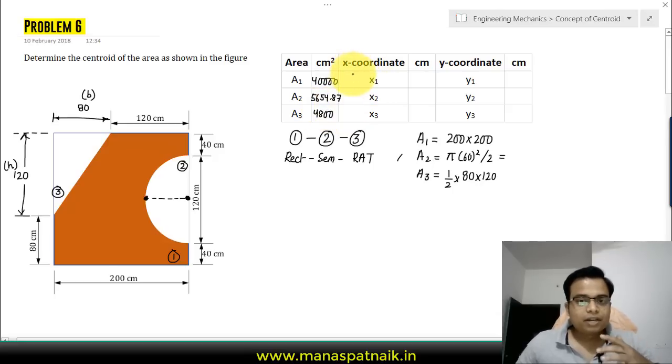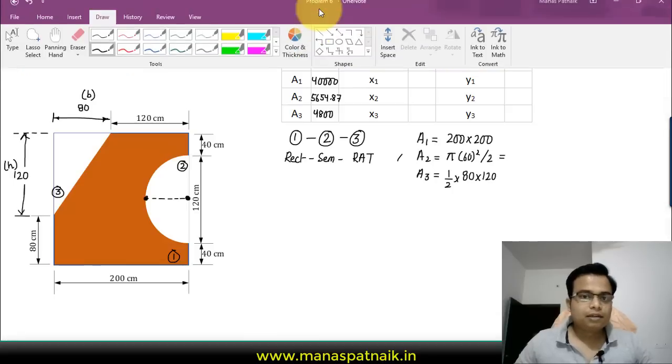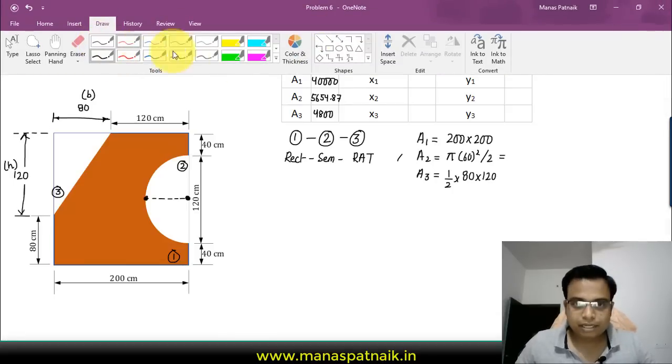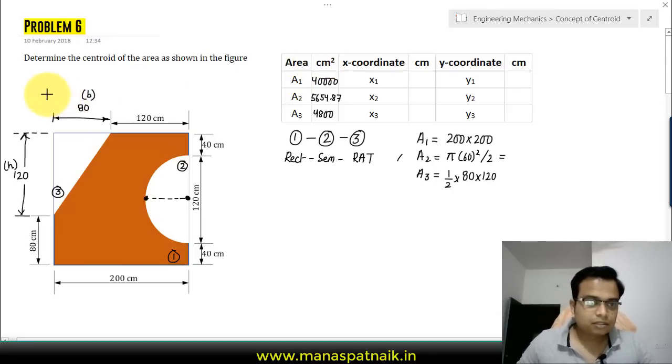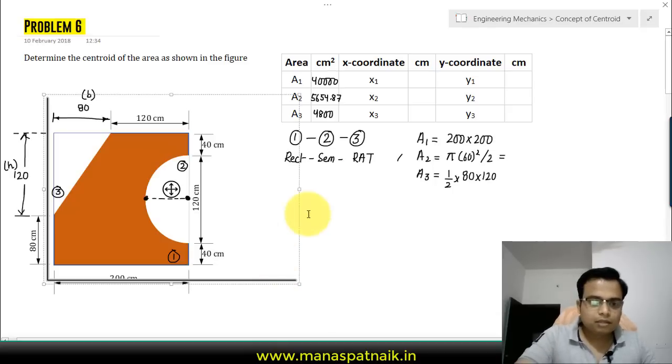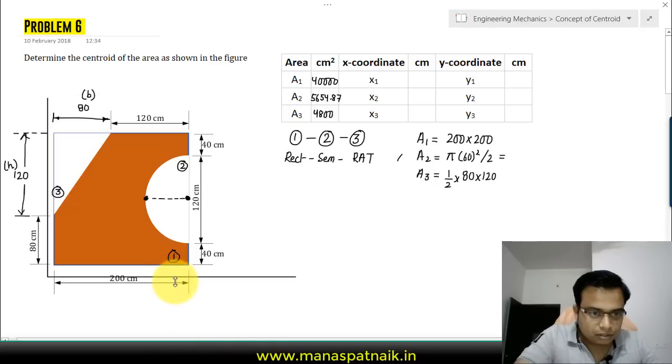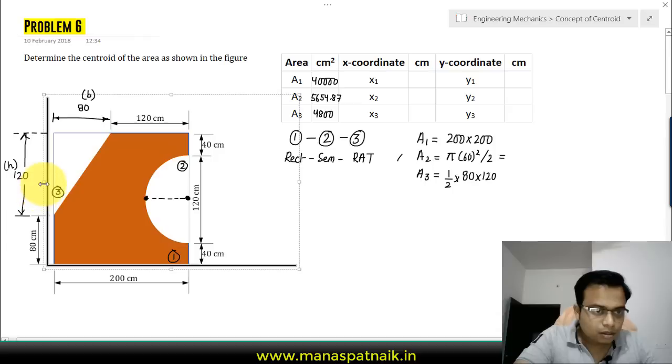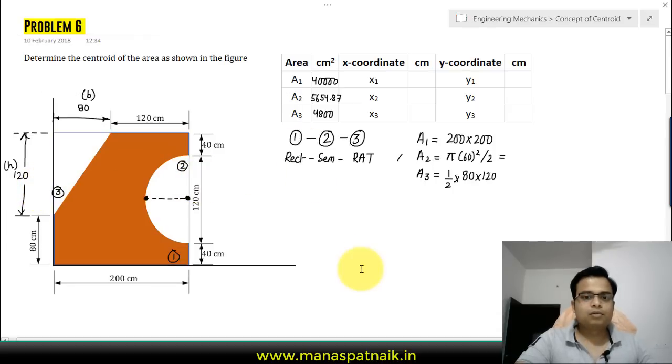Now what we need to do is find the x coordinates individually for all the three geometrical shapes. For that, first I would like to take a coordinate axis. This is essentially the y-axis and this is the corresponding x-axis.